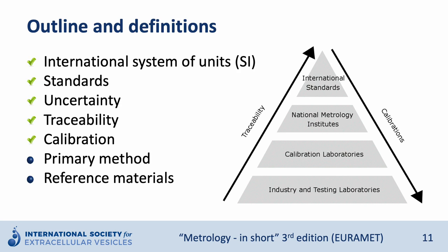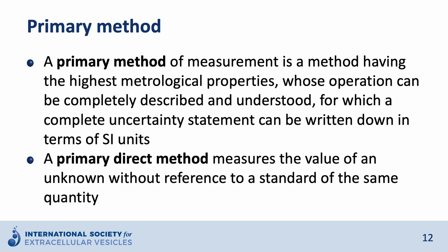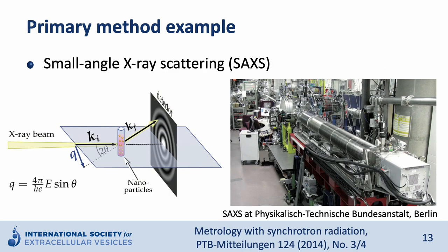I would like to introduce the term primary method, which can be used to produce reference materials. A primary method of measurement is a method having the highest metrological properties whose operation can be completely described and understood, and for which a complete uncertainty statement can be written down in terms of SI units. A special group are called primary direct methods, which measure the value of an unknown without reference to a standard of the same quantity. As an example, for the size characterization of nanoparticles, small angle X-ray scattering or SAXS can be used. In SAXS, a monochromatic X-ray beam hits the nanoparticle sample in solution, and from the scattering pattern the size of the nanoparticles can be determined with stated uncertainty. On the right you can see a photo of a SAXS beam line at PTB, the German Metrology Institute.